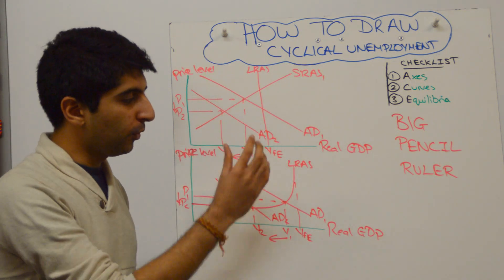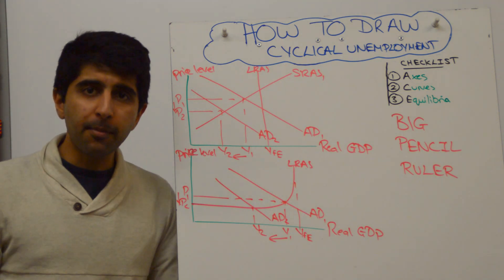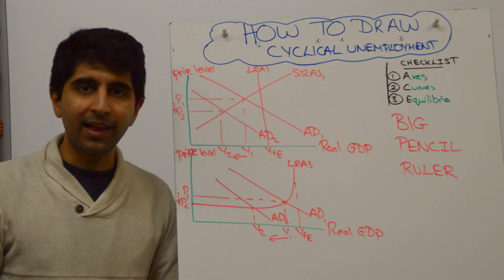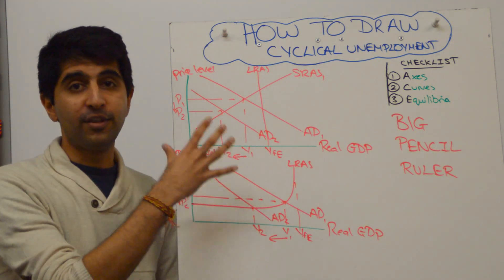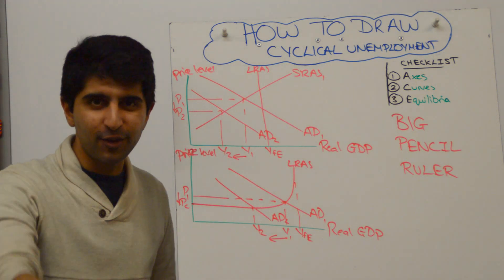either using the classical model or the Keynesian model. Some of you might have learned this in terms of the labor market and going to the labor market and showing it that way. This is much easier. So I would use one of these two diagrams. It's fine. Thanks for watching this, guys. See you in the next video.